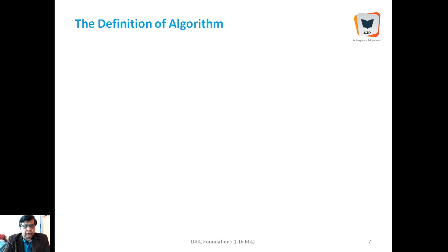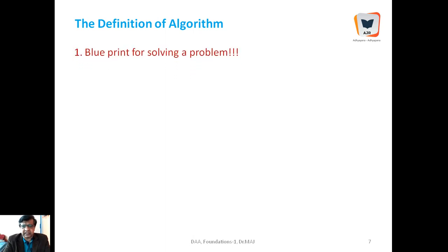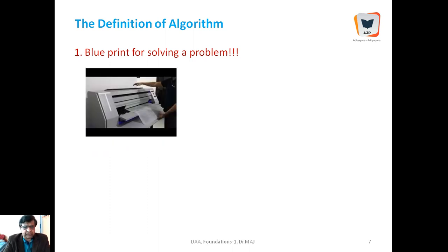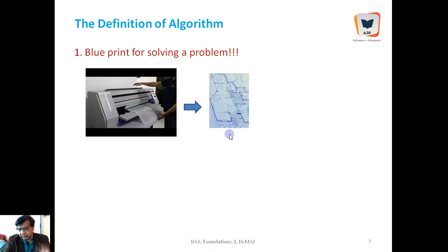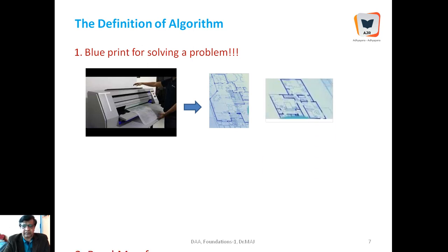There are at least half a dozen definitions of algorithm which are completely different from each other, and the definition is more or less context-specific. The first definition found in the literature is: algorithms can be defined as a blueprint for solving a problem. A blueprint is generated by a blueprint-generating machine — used by civil engineers to draw out plans — which is then submitted to municipal or corporation authorities for approval before construction begins.